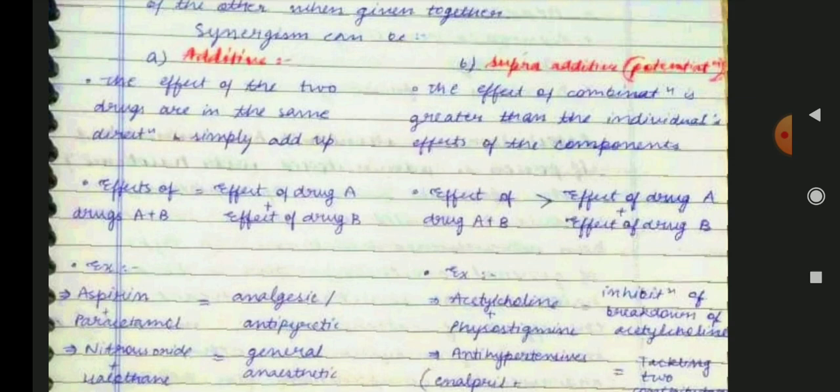For additive synergism, an example is aspirin plus paracetamol — their antipyretic action adds one-to-one. Another example is nitrous oxide and halothane combination, which are general anaesthetic agents — liquid and gaseous.